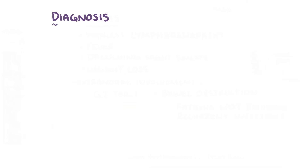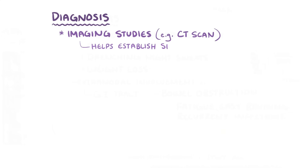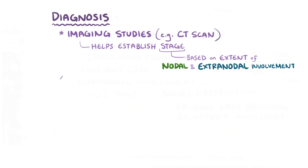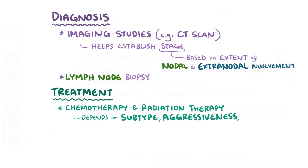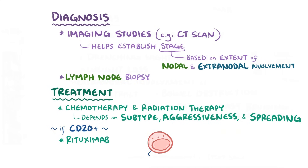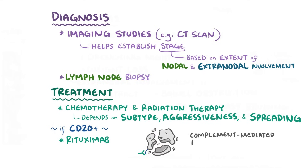Identifying non-Hodgkin lymphoma often starts with imaging studies like a CT scan, which can help establish the stage of the lymphoma based on the extent of nodal and extranodal involvement. A lymph node biopsy is required for diagnosis. Treatment mainly consists of chemotherapy and radiation therapy, depending on the subtype and how far it's spread. If the lymphoma has CD20-positive B cells, rituximab can be used — a monoclonal antibody that binds CD20 and induces complement-mediated lysis, direct cytotoxicity, and apoptosis.